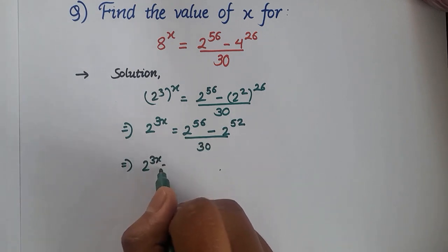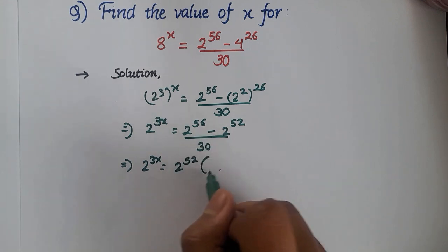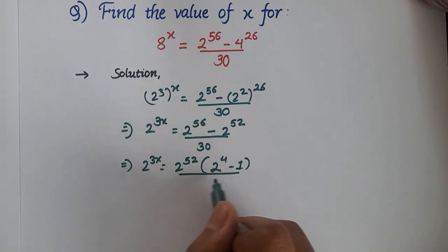Now let us take 2^52 common from the two numbers, then we will have 2^52(2^4 - 1) over 30.